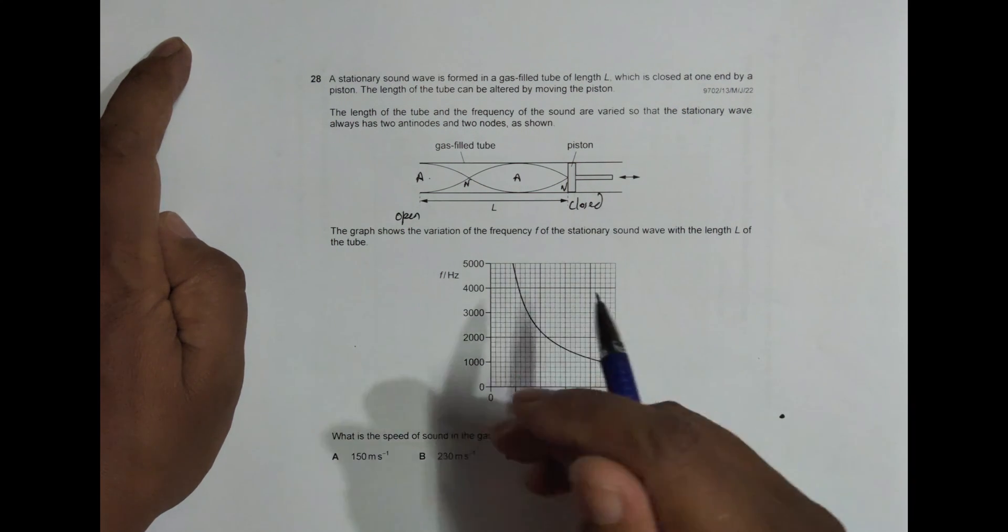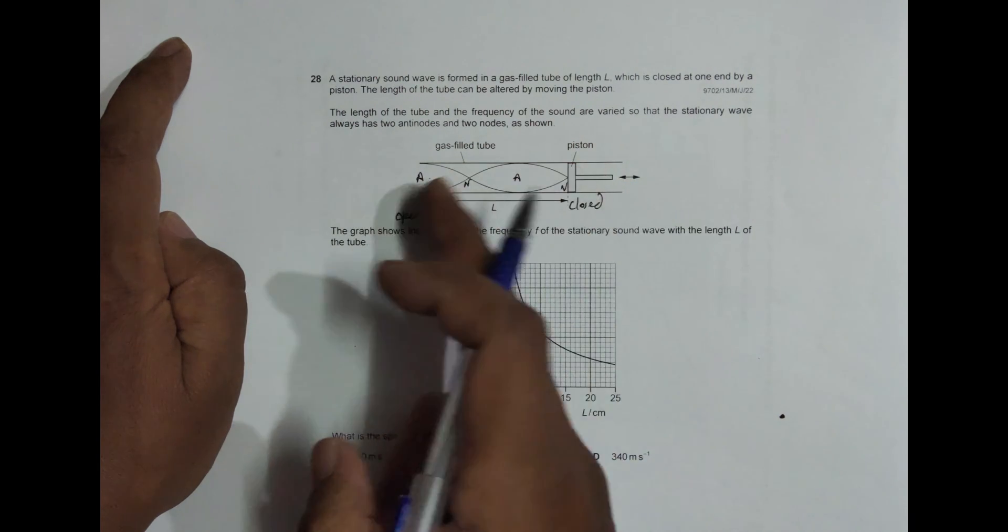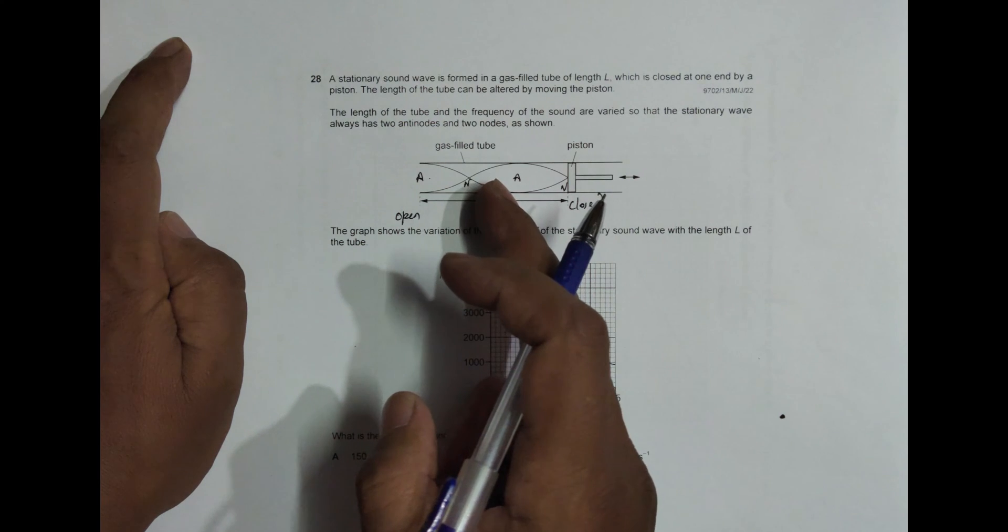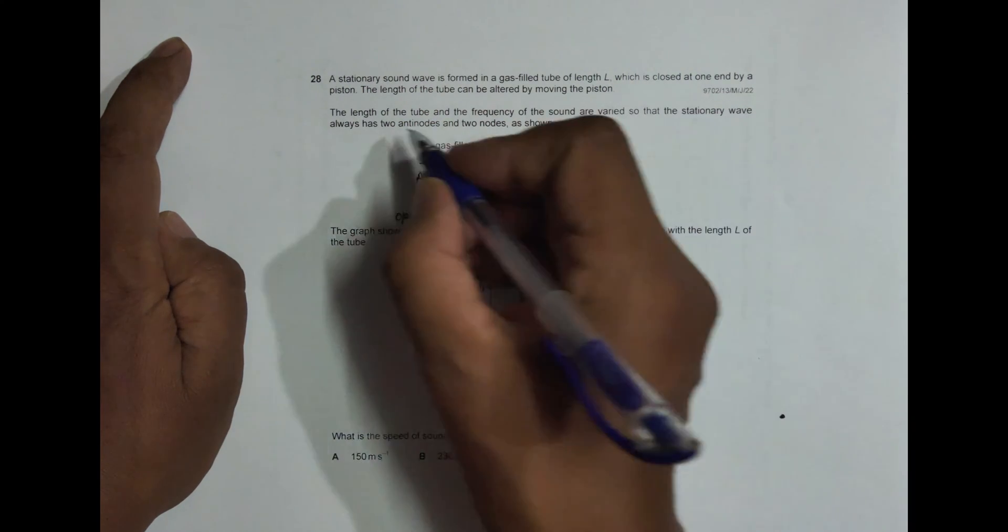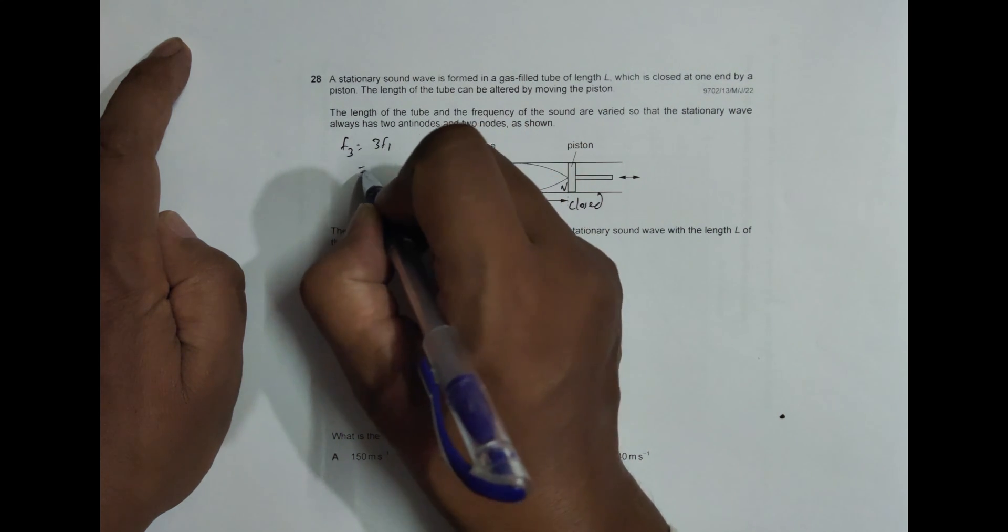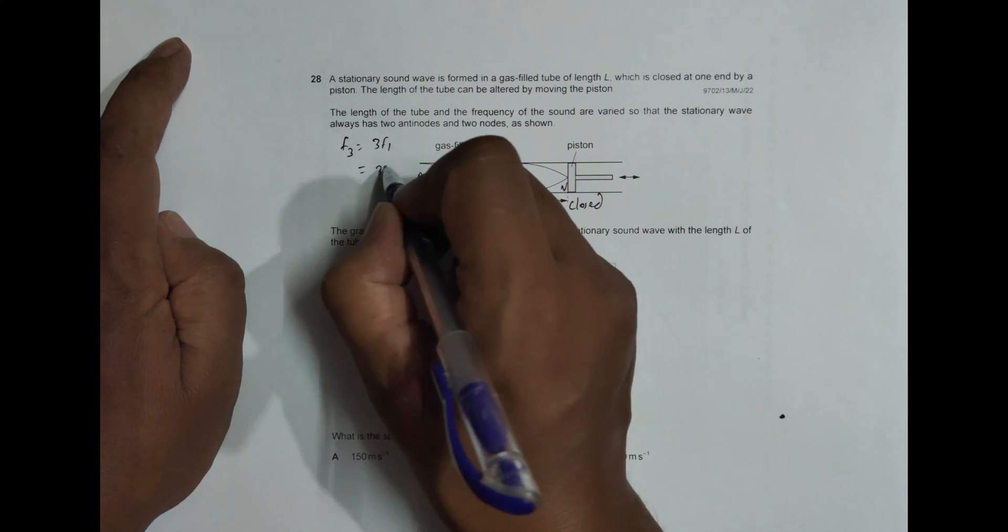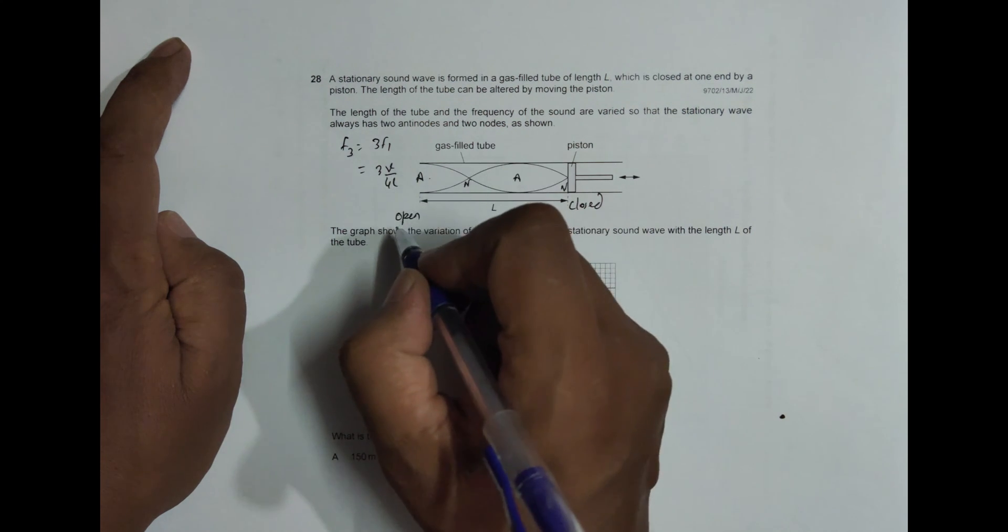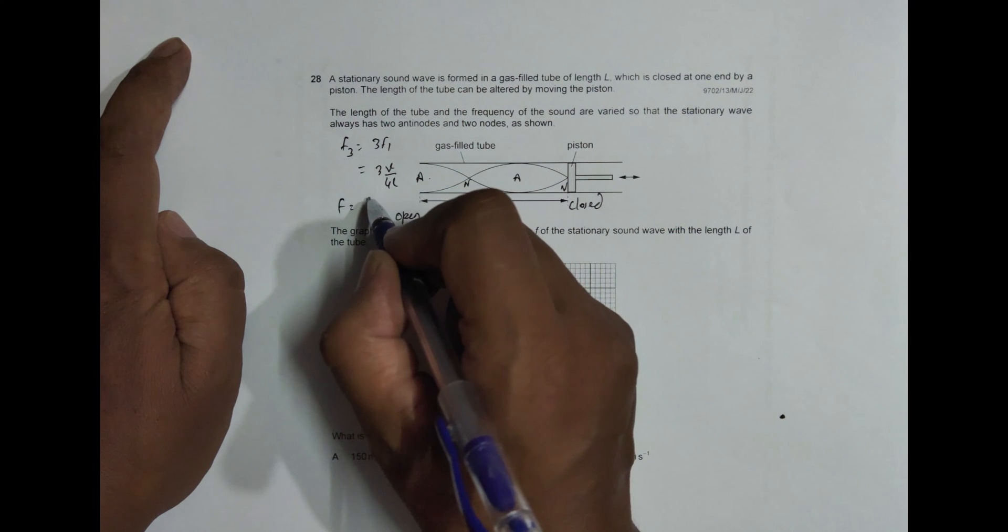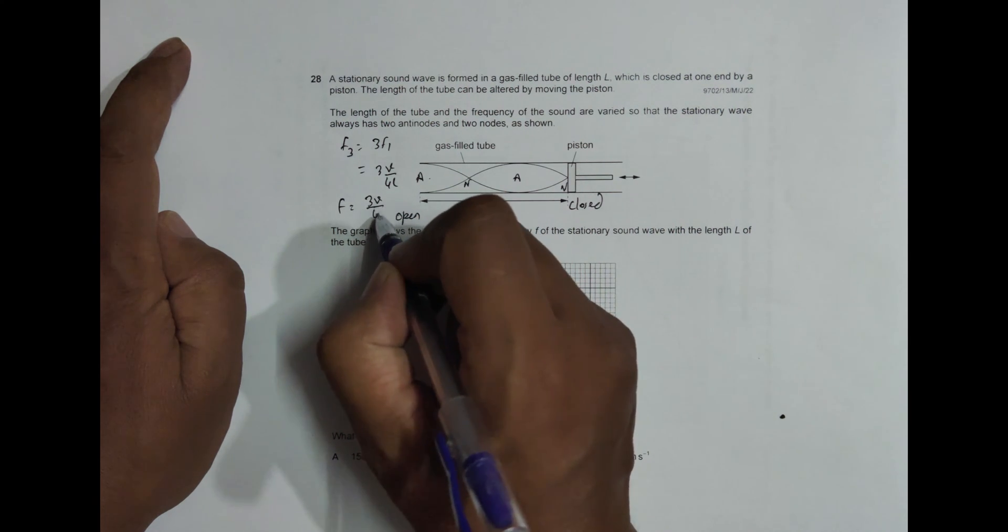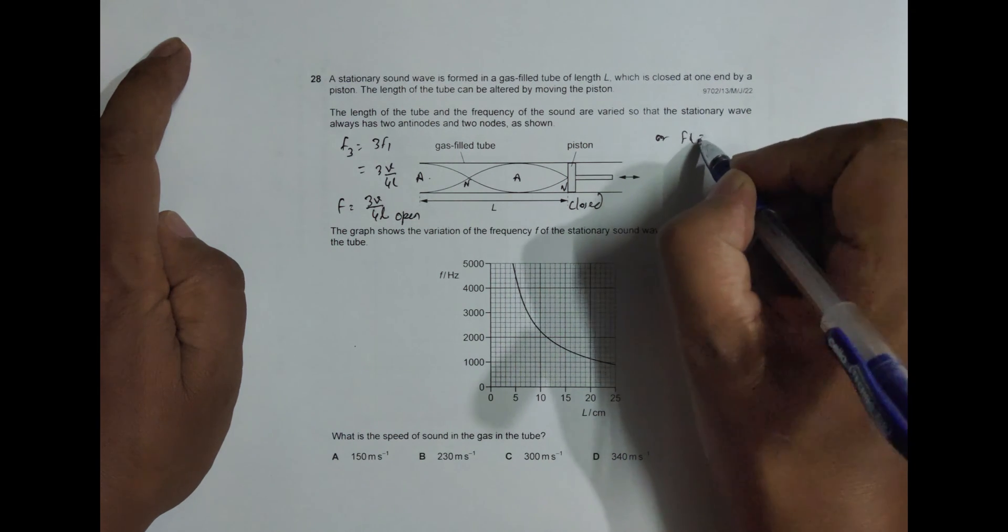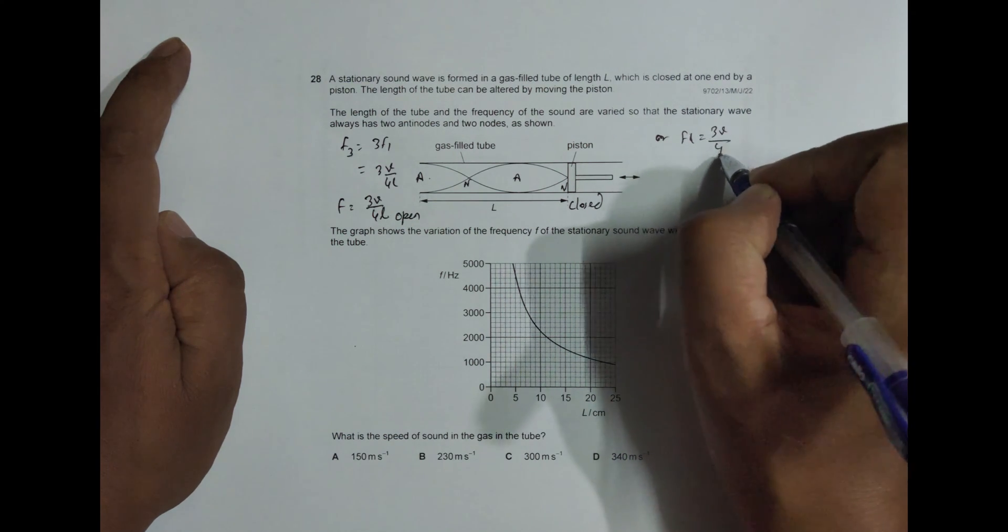Now the first thing that we have to realize is what is the frequency formula. So here we have got third harmonic. So F3 will be equal to 3F1 which equals 3V by 4L. So this F will be equal to 3V by 4L, which also gives us FL is equal to 3V by 4.